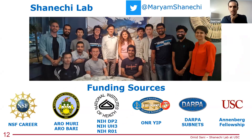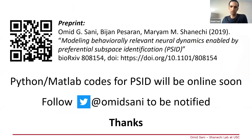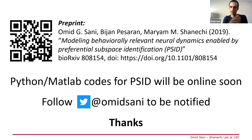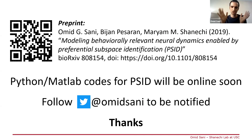With that, I would thank the lab and all the funding sources. Here is the link to our preprint, and the Python and MATLAB code for PSID is available online. This is a general method you can apply to any two signals — like neural activity from two different brain regions to find shared dynamics, or even two different non-neural signals. The math and simulations don't care about the signal type. I'm excited to see what people might find using this method. Happy to take any questions.